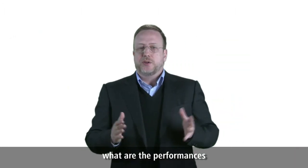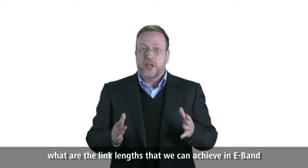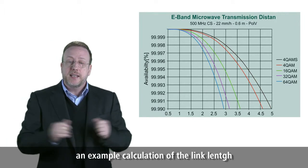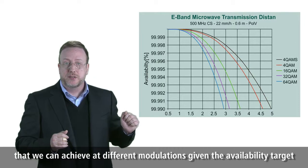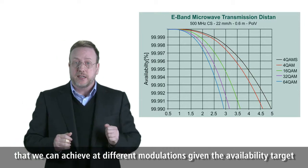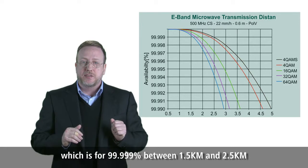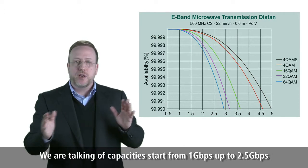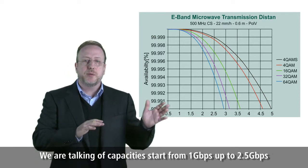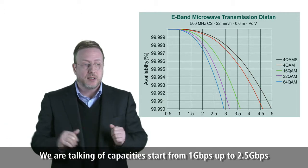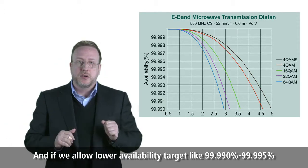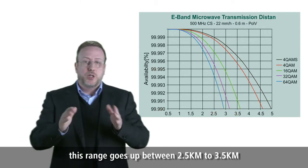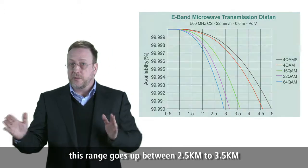So what are the capacities, the performances, and the link lengths that we can achieve in eBand? We show here in this slide a sample calculation of the link lengths achievable at different modulations given the availability target. We have a range of attainable link lengths which for five nines availability is between 1.5 and 2.5 km, with capacities starting from 1 Gbps up to 2.5 Gbps. If we allow a lower availability target of 99.995%, this range goes up to between 2.5 and 3.5 km.